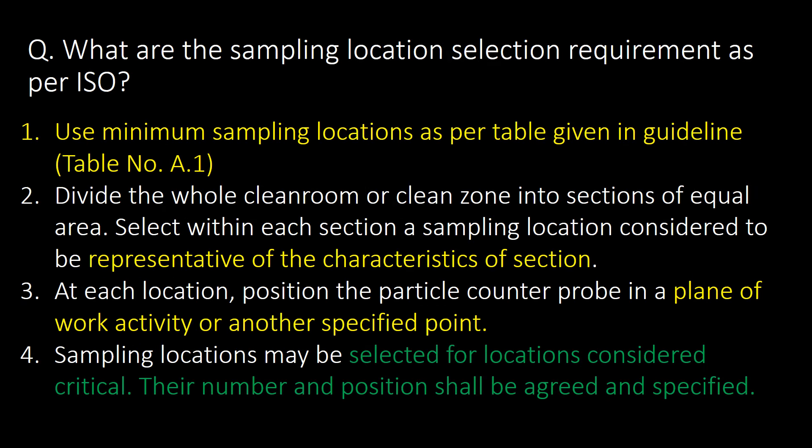What are the sampling location selection requirements as per ISO? Requirement one: use the minimum number of sampling locations as per the table given in the guideline — Table A.1 — which we saw in the last question's answer. Requirement two: divide the whole cleanroom or clean zone into sections of equal area, and select within each section a sampling location considered to be representative of the characteristics of that section.